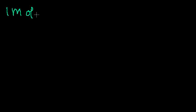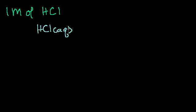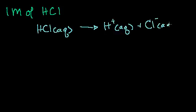Let's say I have one molar of — let me pick a strong acid — let's say it's hydrochloric acid, HCl. We know that since it's a strong acid, it dissociates completely. So HCl in an aqueous solution dissociates completely into hydrogen ions in an aqueous solution — which is really hydronium — plus your chlorine anion. So if you have one molar of this, as soon as you put it in water, you really have one molar of H+. So your hydrogen concentration is one molar.